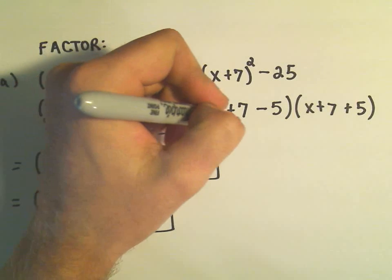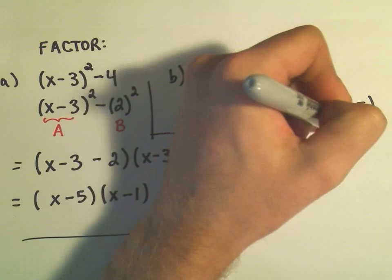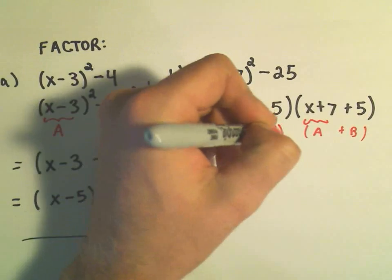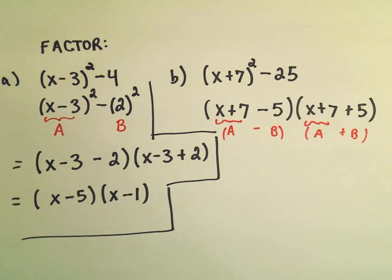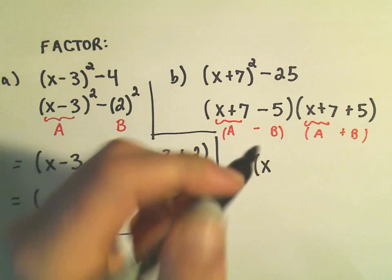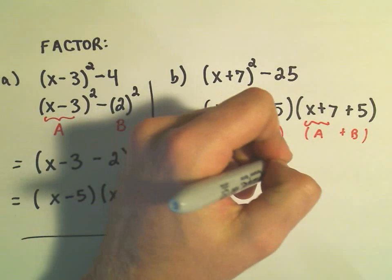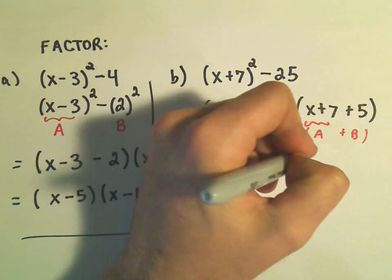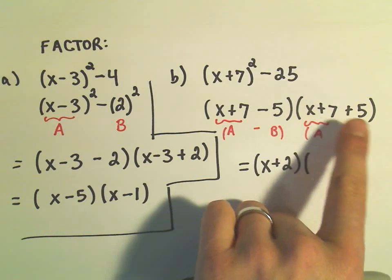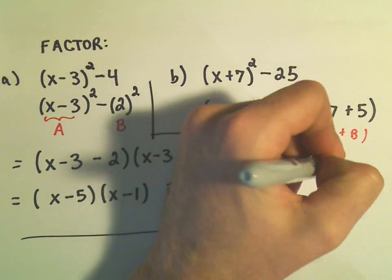So there's my a term minus our b term, and then our a term plus our b term. We can simplify this down a little bit. In the first set of parentheses, we have x and then positive 7 minus 5, that'll leave us with a positive 2. In the second set of parentheses, we'll have positive 7 and positive 5, which will give us x plus 12.